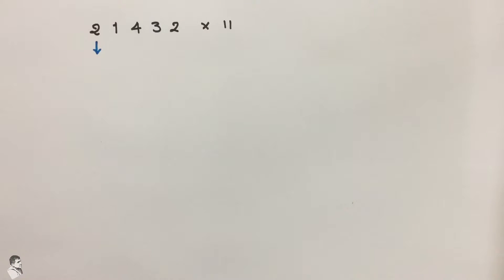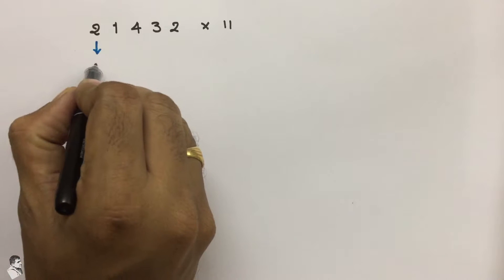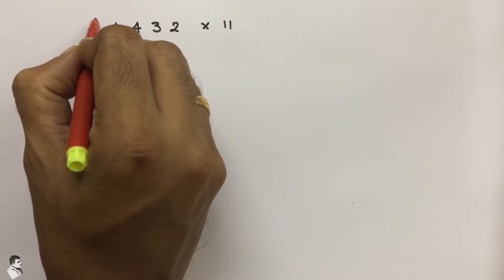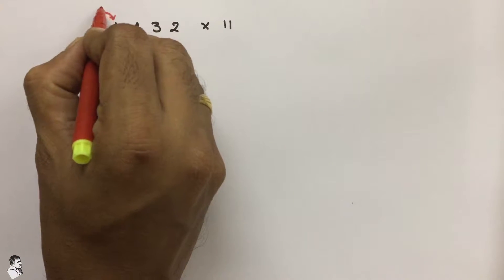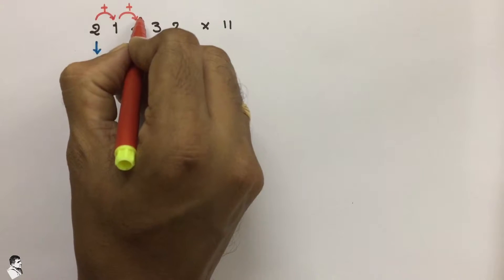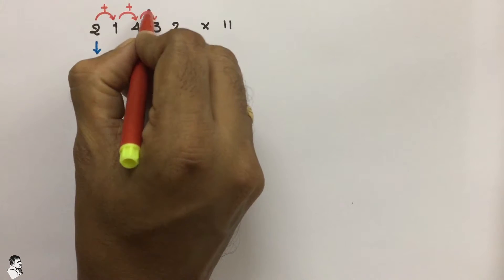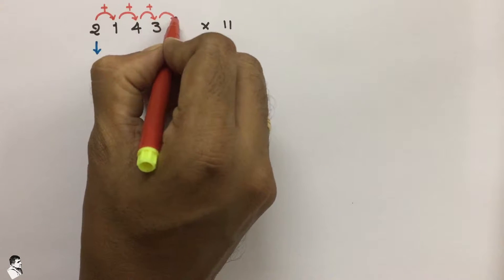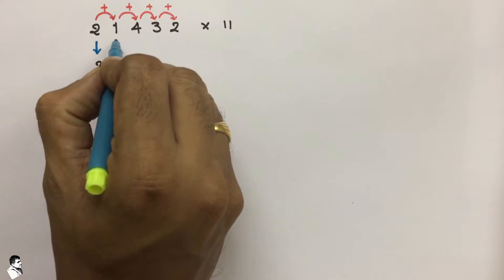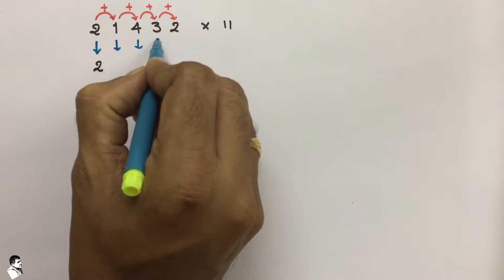The technique is that you have to write down the first value, that is 2, as it is. Then after, you have to sum up the values one by one — you sum up each value with its adjacent value and write down the answer below.